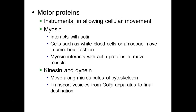The motor proteins are going to be instrumental in allowing cellular movement. Myosin is one of the motor proteins, and two of the others are kinesin and dynein. Myosin commonly interacts with actin. When we saw the amoeba move — or white blood cells, which move very much the same way — this is happening because myosin is interacting with actin proteins. Myosin also does this with actin to move muscles. Kinesin and dynein are motor proteins that act like little cars driving along the microtubules of the cytoskeleton. These are the structures that can transport vesicles from the Golgi apparatus to the final destination, for example to the plasma membrane.